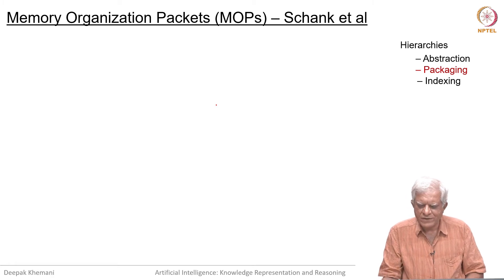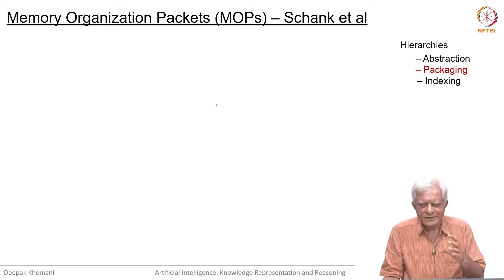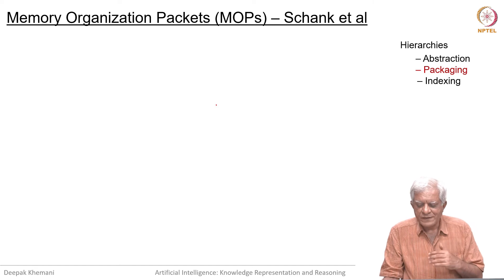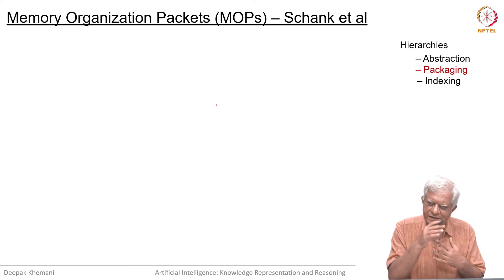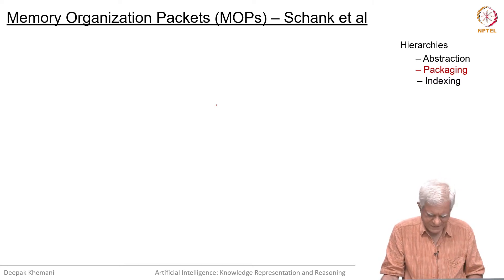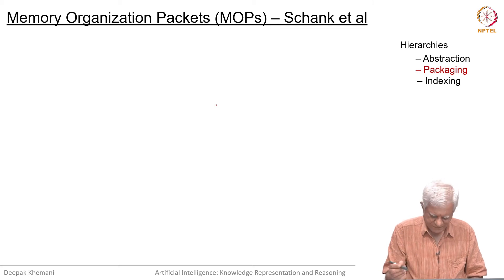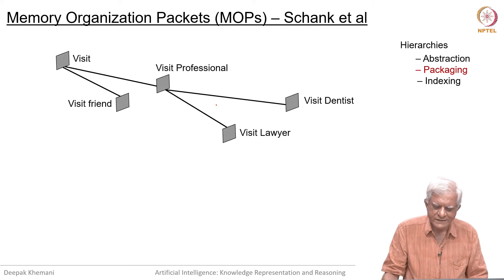According to Schank, there were three kinds of hierarchies. One was the abstraction hierarchy, which is like a taxonomy. One is a packaging hierarchy, which captures the part-of hierarchy. And the third is the indexing hierarchy, which usually was the abstraction hierarchy, because if you wanted to search for something, you could follow those indices.